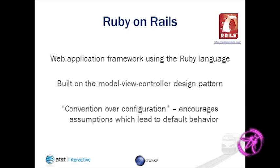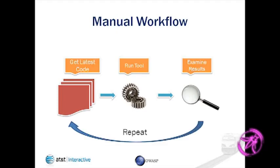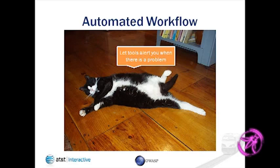If you're using a tool like Brakeman, this is kind of the workflow: you get the latest code, run the tool, look at the results, and tell somebody about them. But then when the code changes, you do it again and again. This is what happened to me — I wrote the tool, ran it, then the code changed so I had to run it again. Of course, what we really want to do is write tools that will tell us when there's a problem. That's our goal.